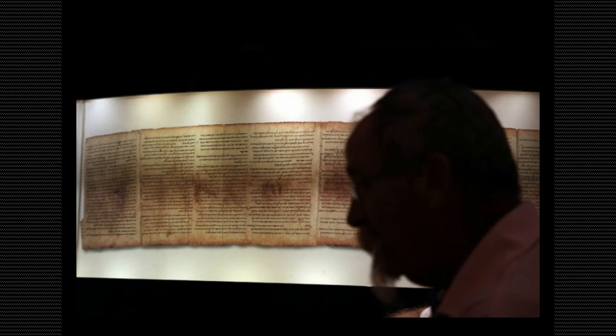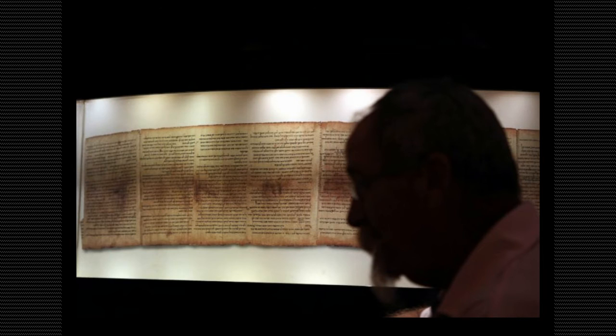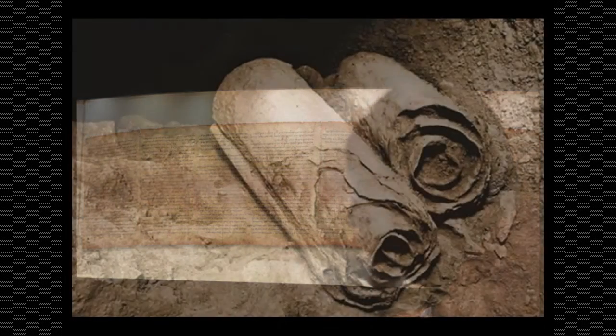The Dead Sea Scrolls, which include the oldest known manuscripts of the Hebrew Bible, date from the 3rd century BC to the 1st century. Around 900 scrolls were discovered between 1947 and 1956 in the Qumran Caves above the Dead Sea. This discovery of a 12th cave could revolutionize the information we have on the Dead Sea Scrolls, Hebrew University archaeologist Oren Gutfeld told AFP, calling it one of the most important discoveries since 1956.